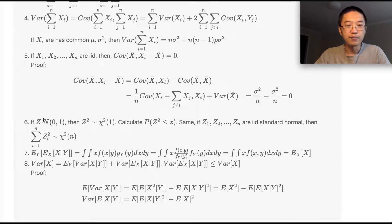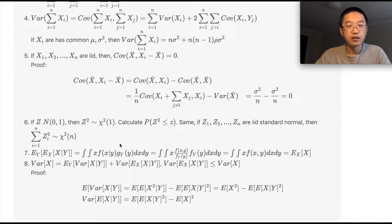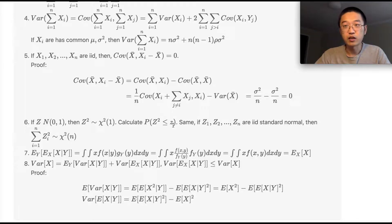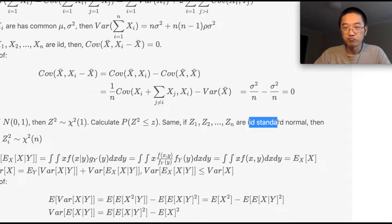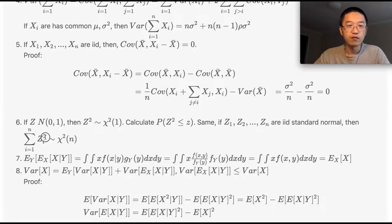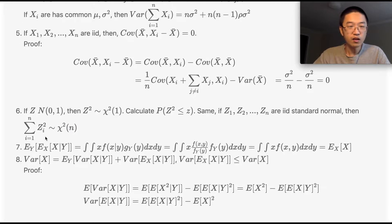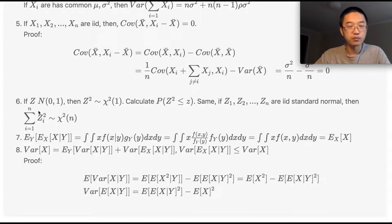Next: if Z is a standard normal random variable, then Z² is chi-square with one degree of freedom. This is easy to prove — write down the formula for P(Z² ≤ z), do a variable transformation, and you get exactly the PDF for chi-square(1). Similarly, if Z₁ to Z_n are i.i.d. standard normal, then the sum of Z_i² is chi-square with n degrees of freedom.